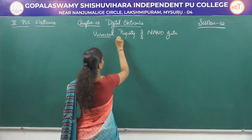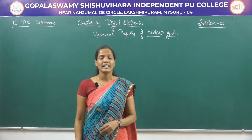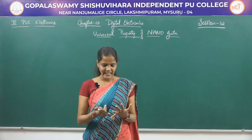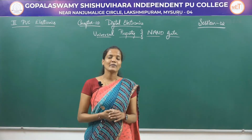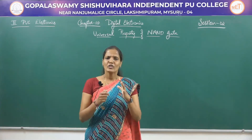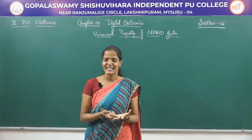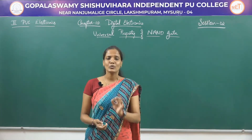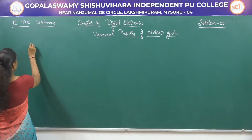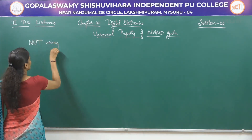NAND and NOR are called universal gates because using these 2 gates, we can realize all the other types of gates — all the basic gates like AND gate, OR gate, NOT gate. Along with that, we can also realize the combinational gates like XOR and XNOR. So in today's session, we will be seeing how we can construct these basic gates using only NAND gate. Let's begin with the very first realization: NOT using NAND.